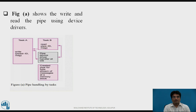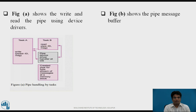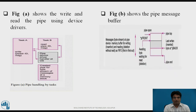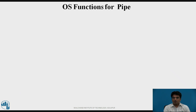Figure A shows write and read of the pipe using a device driver. As shown in the figure, Task A writes the message through the pipe and Task B reads the message through the pipe with the help of the pipe device driver handler at the OS. Figure B shows the pipe message buffer. In pipe_open, a waiting byte is waiting for read or deletion; pipe_top is used for the last written or inserted byte through the back pointer; and the front pointer is at the starting edge of the pipe.